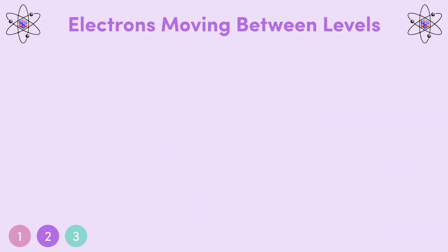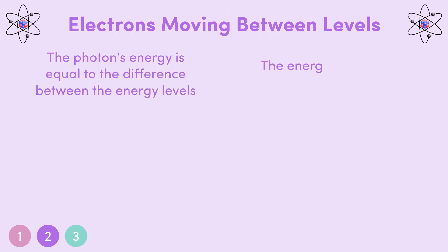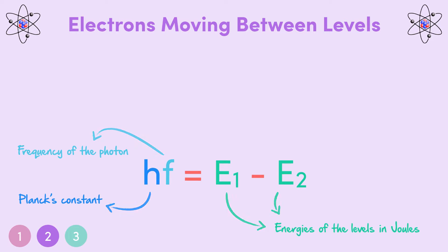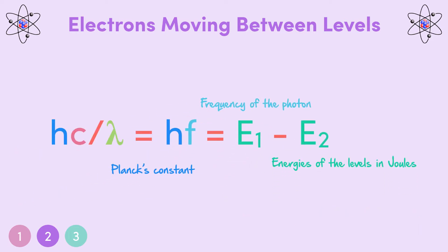Now we have a formula to show this process. Since the photon's energy must be equal to the difference between the energy levels, and the energy of a photon can be given by E equals HF, we can say that HF equals E1 minus E2. Where F is the frequency of the photon, E1 and E2 are the energies of the levels involved in joules, and H is Planck's constant, which will be on your formula sheet. We can also write this as HC over lambda equals E1 minus E2, with C being the speed of light and lambda being the wavelength of the photon, since the frequency F equals C over lambda.